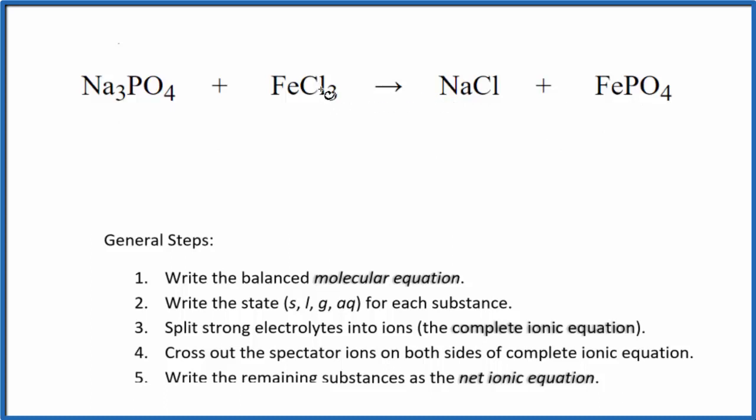You can see I have 3 chlorines here, 1 here, 3 sodiums, and just 1. If I put a 3 here, that fixes the sodiums and the chlorines. I have 1 iron, that's okay. A phosphate, and a phosphate. So that's the balanced molecular equation.